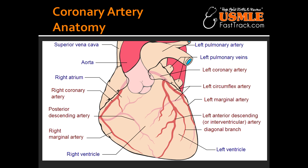What regions of the heart are supplied by the acute marginal artery? The acute marginal artery supplies the right ventricle, mostly on the anterior side. What areas are supplied by the posterior descending artery, also known as the interventricular artery (PD)? It supplies the posterior one-third of the interventricular septum and the posterior wall of the ventricles.